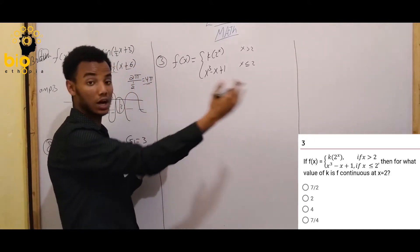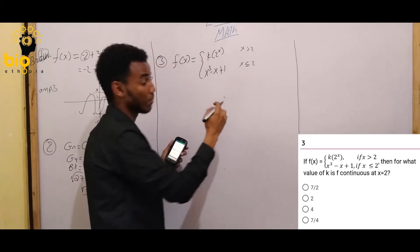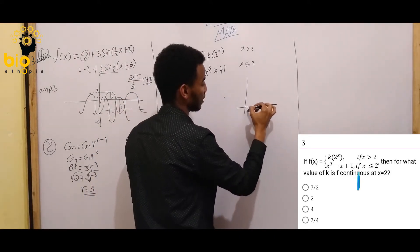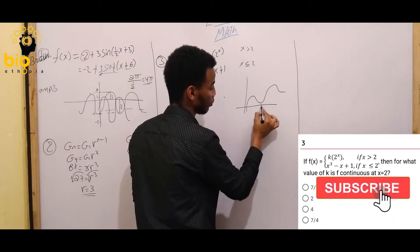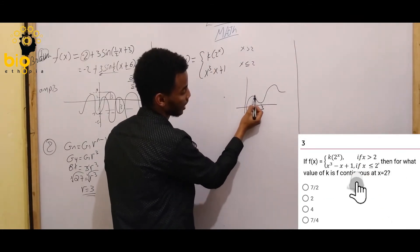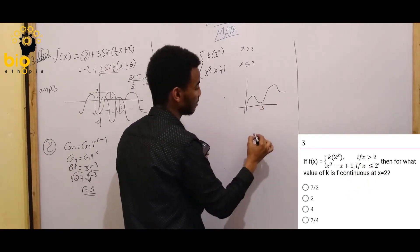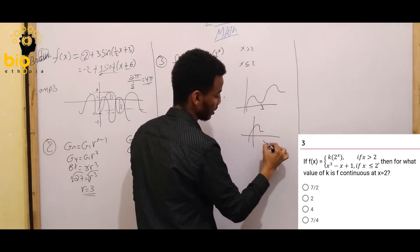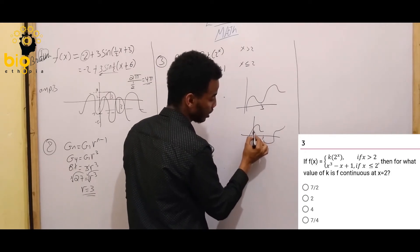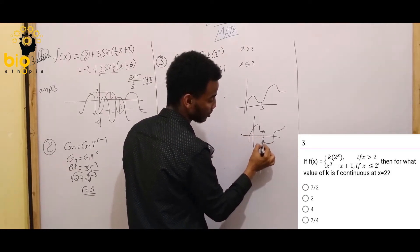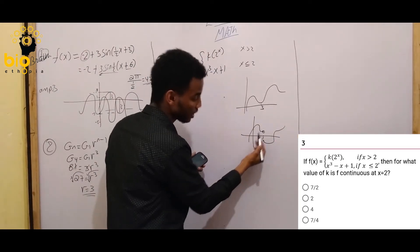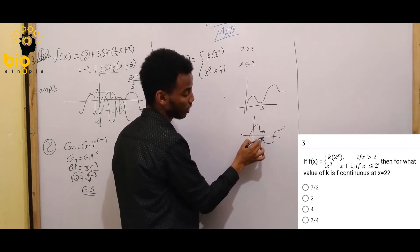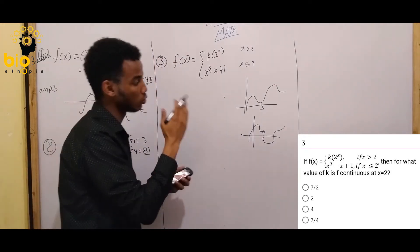For the function to be continuous, the graph must have no break at that point. Continuity means the graph is smooth — no gap or jump. Looking at the graph, if there is a break at a point the function is not continuous. The function must be continuous at x equals 2.